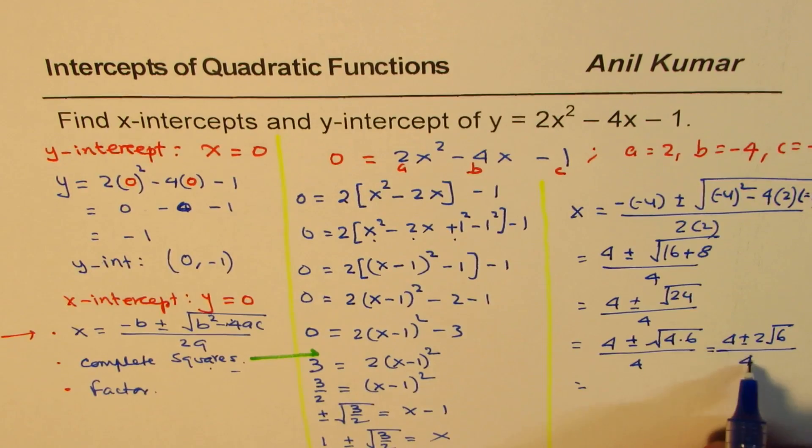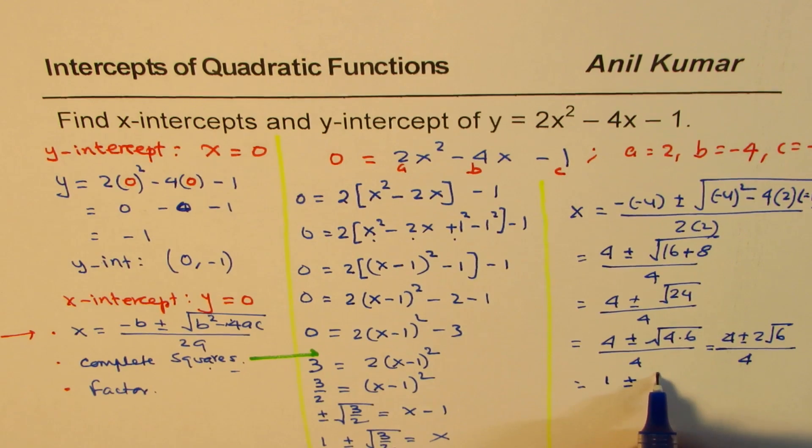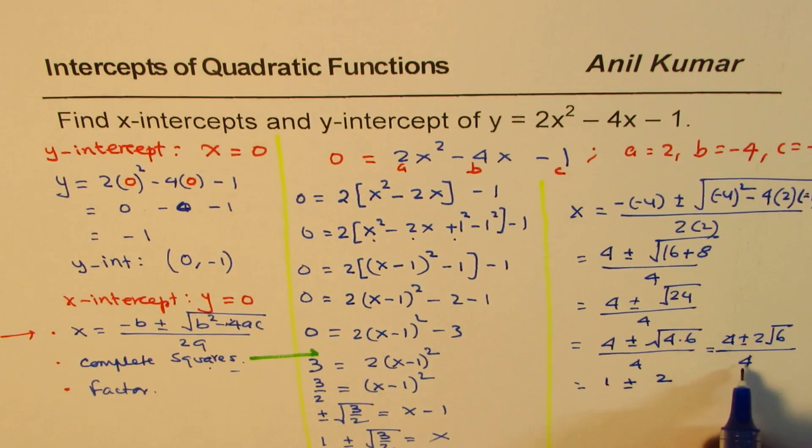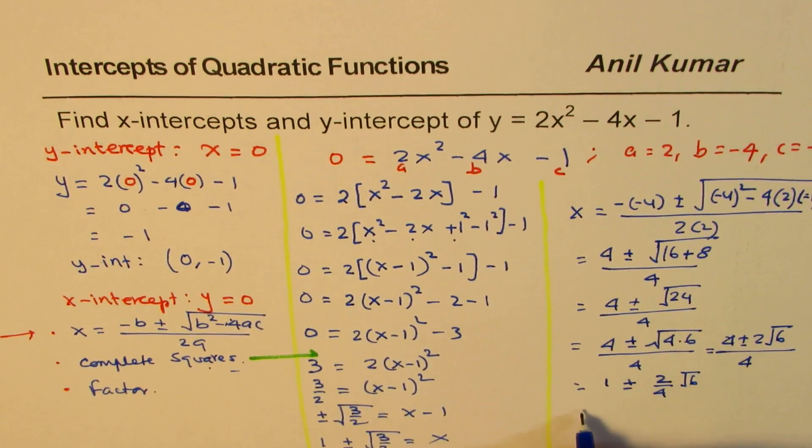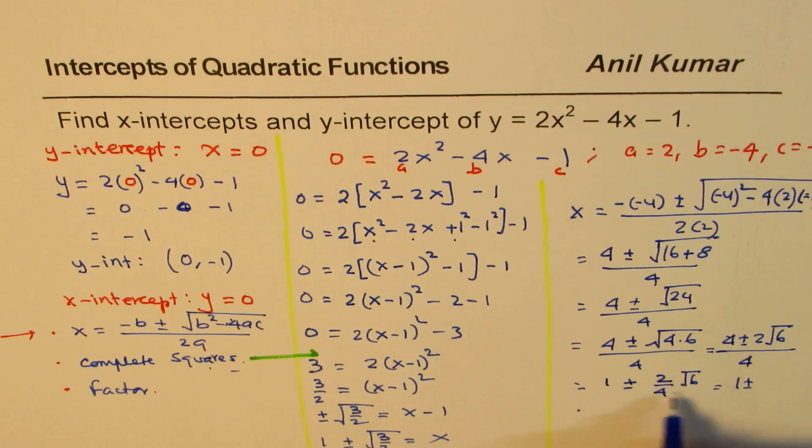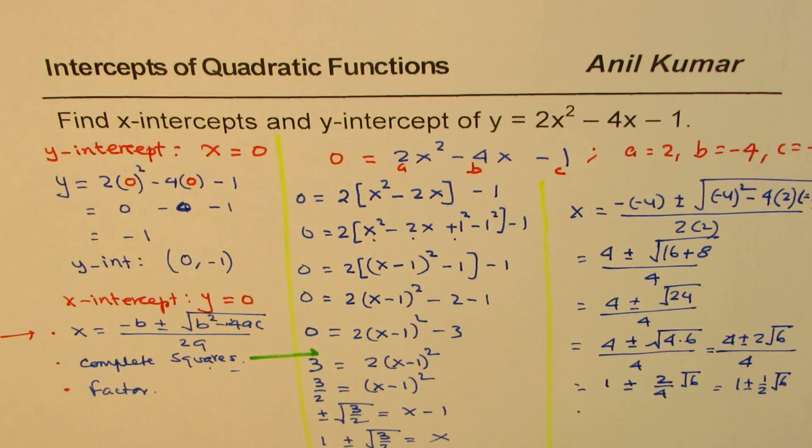Now 4 could cancel. So that 4 divided by 4 is 1, plus or minus 2 and 4. So 2 divided by 4 square root of 6. So that is how you would actually write it. Now that gives you 1 plus minus, that is half of square root of 6.